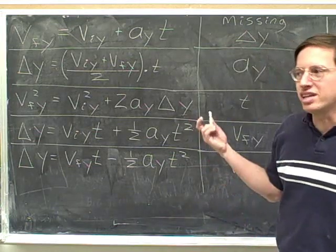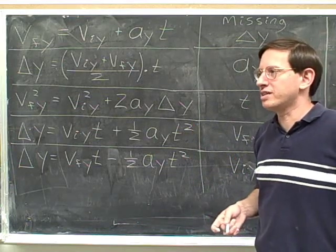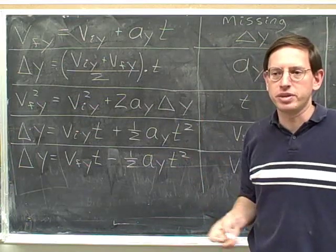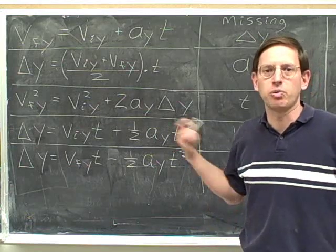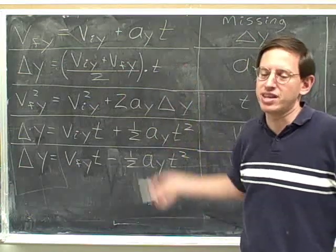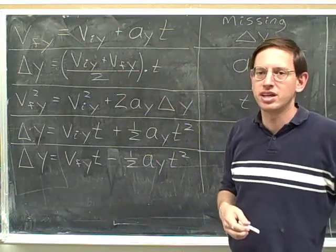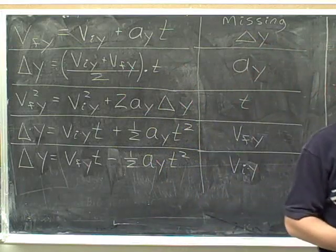I recommend having one page of notes with all ten kinematics equations and their missing variables. Really, in a sense you only need to write down the x-component equations. If you know the equations for the x-components, it should be very easy to get the y-components, so maybe you only need five and you could easily derive the y-components when necessary.